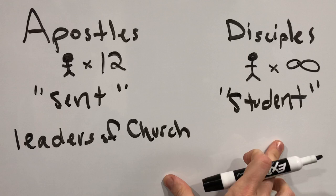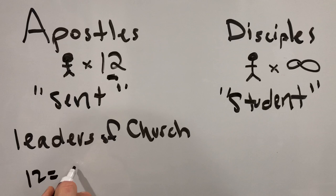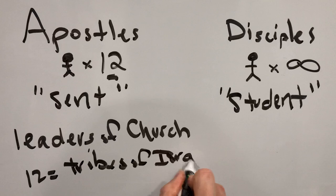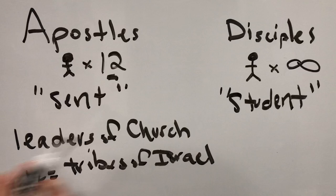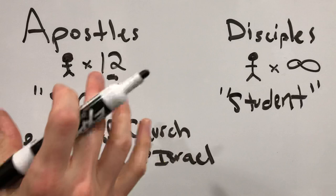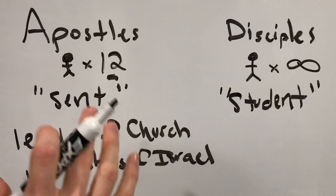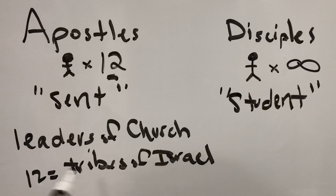Why 12? Why did he pick 12? 12 refers to the number of the tribes of Israel. So the 12 tribes of Israel in the Old Testament carry over into the church, meaning that the 12 apostles are the leaders of the new people of God. When Jesus died and rose again and then ascended up into heaven, he left the apostles in charge. There are 12 of them because they became symbolically the leaders of God's people.